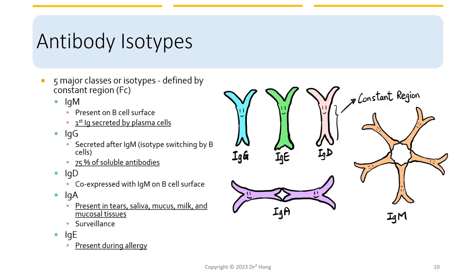In terms of the types of antibodies, there are five major classes or isotypes defined by the constant region or the Fc regions. There are IgM, IgG, IgD, IgA, and IgE. There are also other subclasses within each class that are beyond the scope of this lecture, such as IgG1, IgG4, and others.